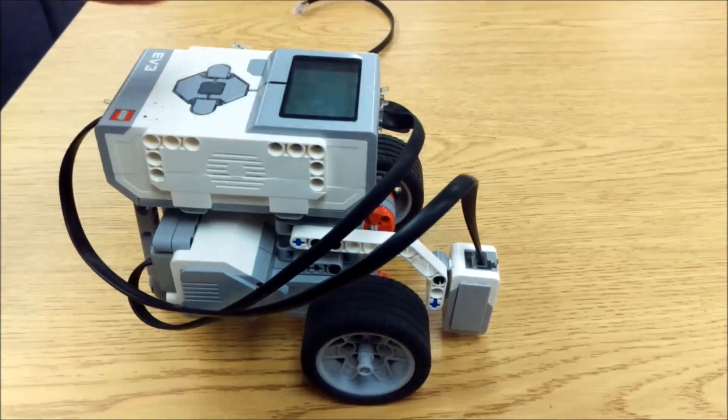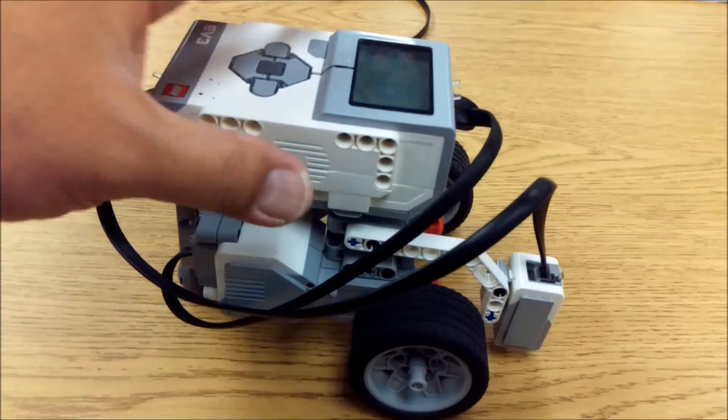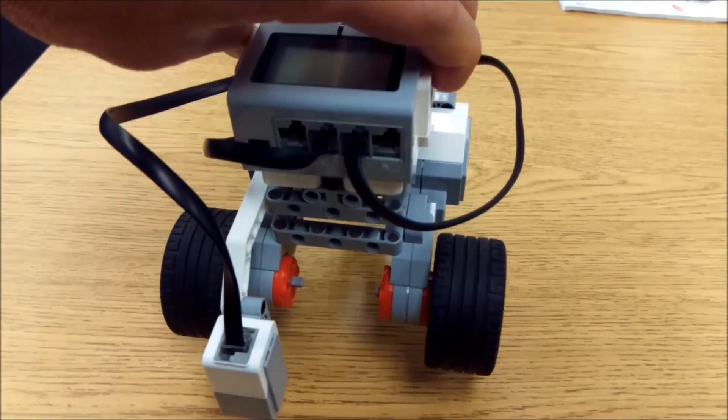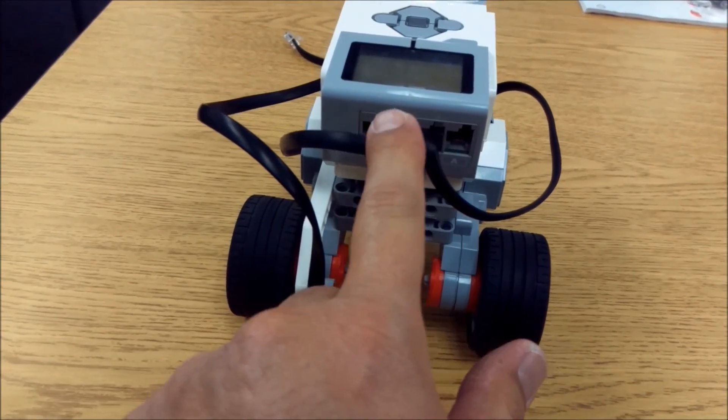Alright everybody, here's your finished product. Again, this cable from the color sensor is going back here to port three. And then the two motors will go into B and C.